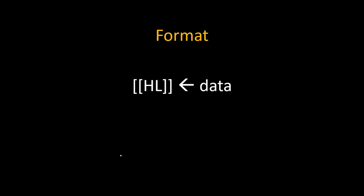Let's try to understand the format of it. Data will get stored inside the content of the memory pointed to by HL. Suppose the instruction is MBI M, 35H. This 35H data will get transferred inside this memory, which is denoted by the content of HL.